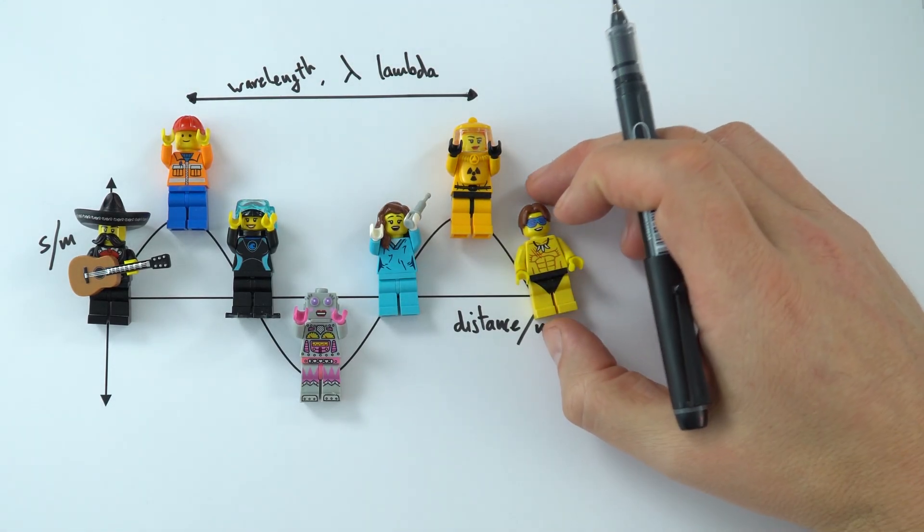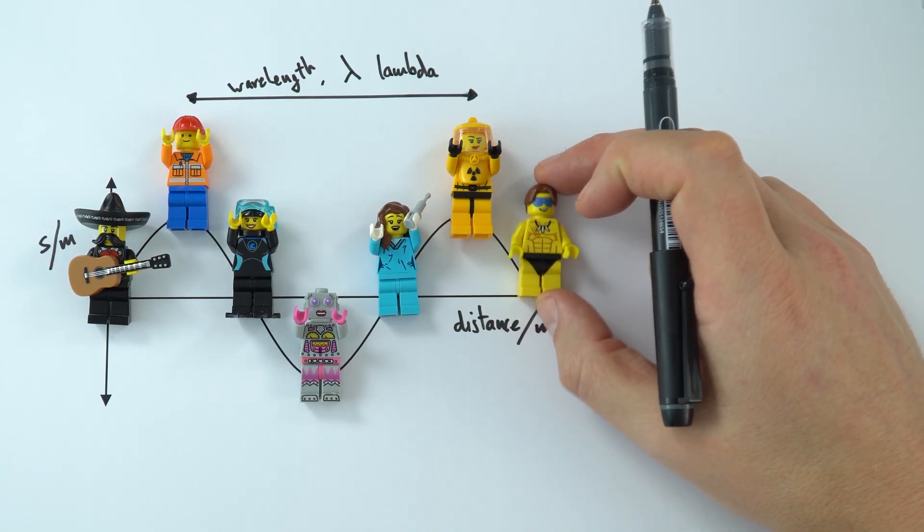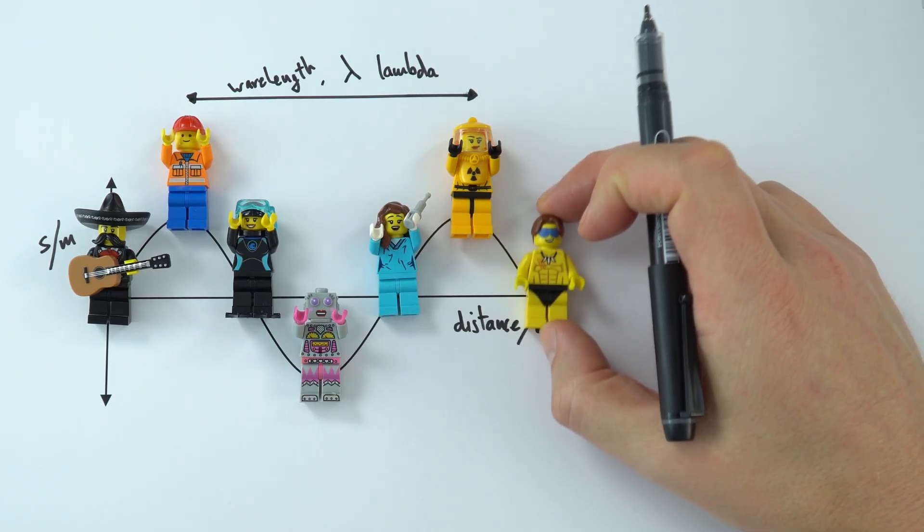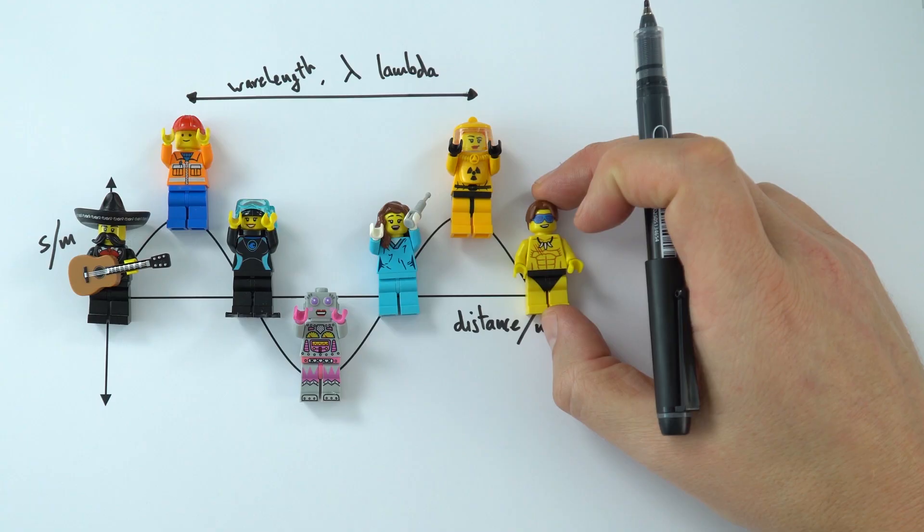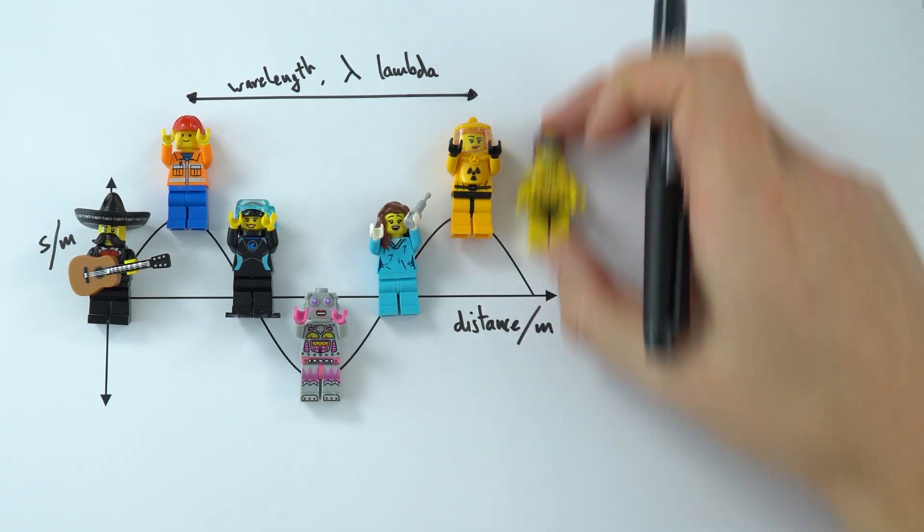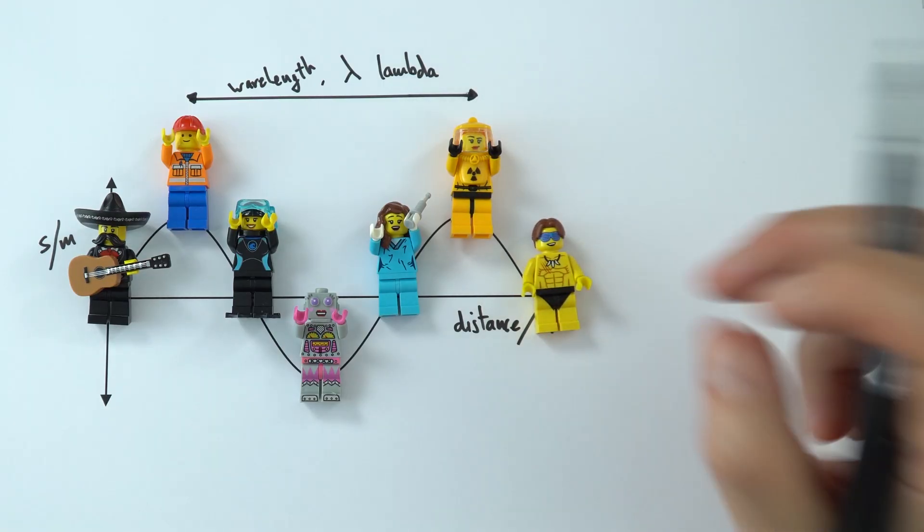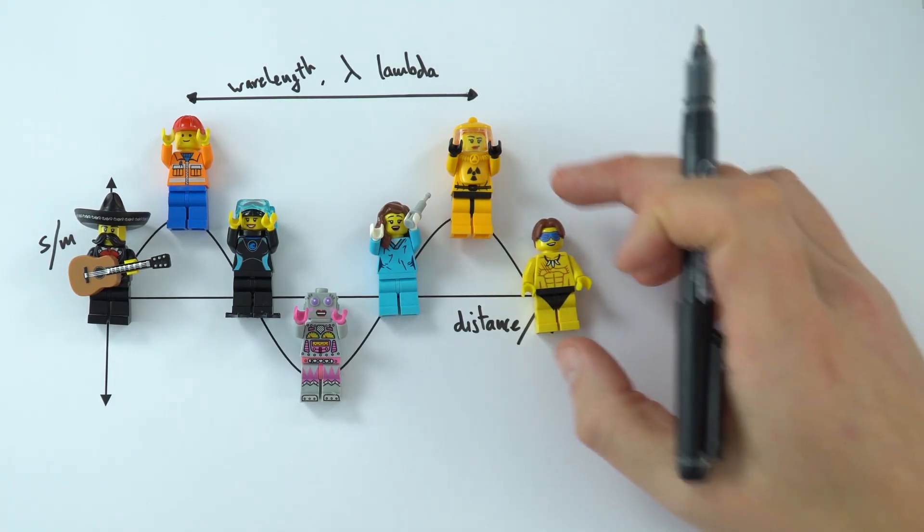Now the other thing that we might be interested in is how much these people go up and down. If the wave isn't transferring much energy, it might have a very small amplitude and the people only oscillate a small amount. If there's loads of energy being transferred, they're going to oscillate a lot more. They're going to vibrate a lot more around their rest position. And that's where we come on to actually think about the amplitude.